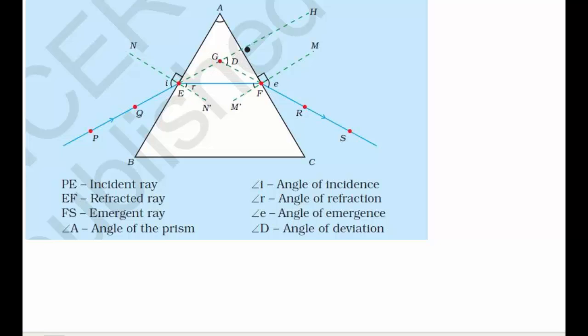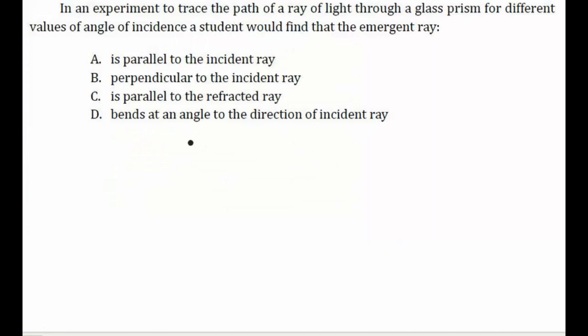to the incident ray direction. That means among our four options, the fourth option is that the emergent ray bends at an angle to the direction of the incident ray. So our fourth option will be the correct option.